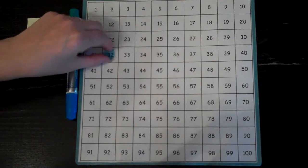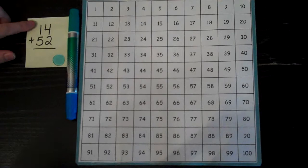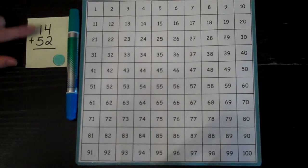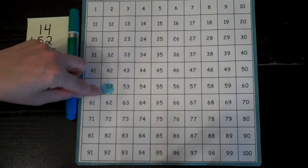Now that we have our supplies, we're ready to start. Here's the question we're going to start with first: 14 plus 52. When adding with a hundreds chart, it's a good habit to always start with the bigger number. So 52 is bigger than 14. I'm going to start with 52 and put my marker on that.